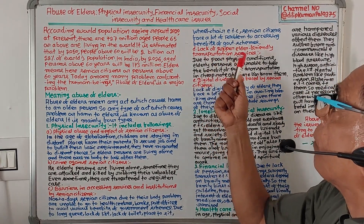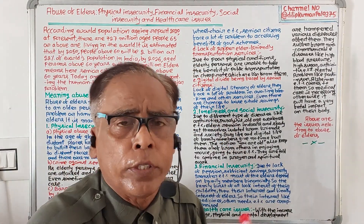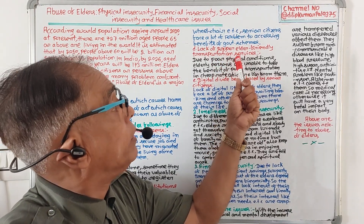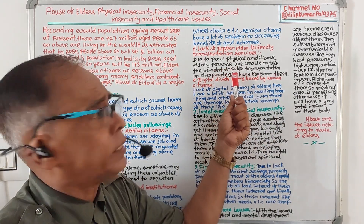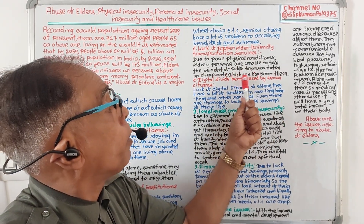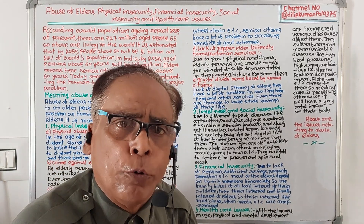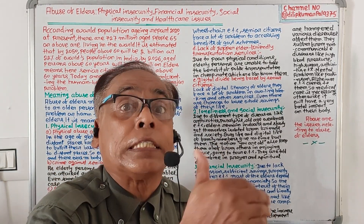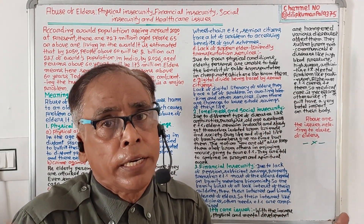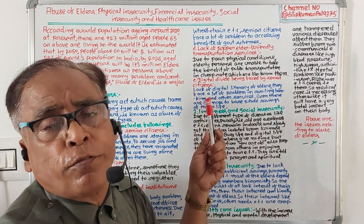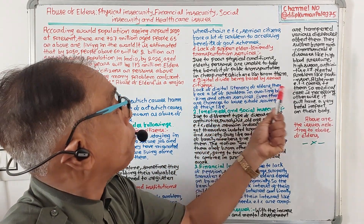Number four is the lack of a proper elderly-friendly transport system. Due to poor physical conditions, elder persons are unable to take the benefit of public transportation at cheap rates. As elder people have become physically weak, they are unable to travel to distant places to avail public transport systems. Number five is the digital divide being faced by senior citizens.